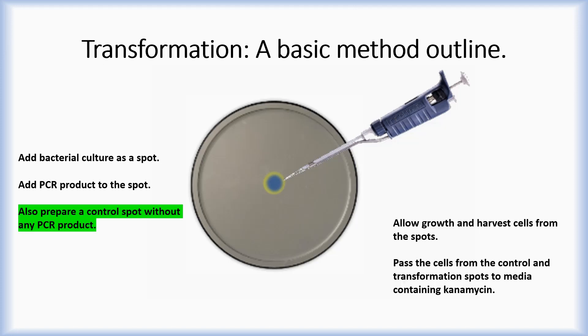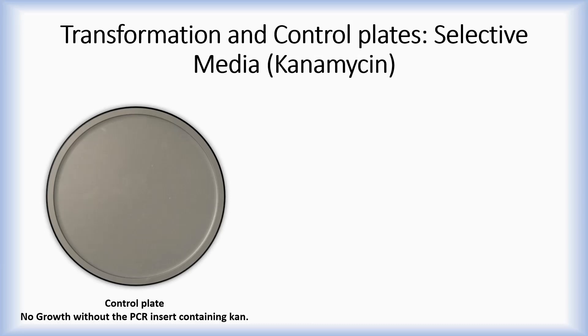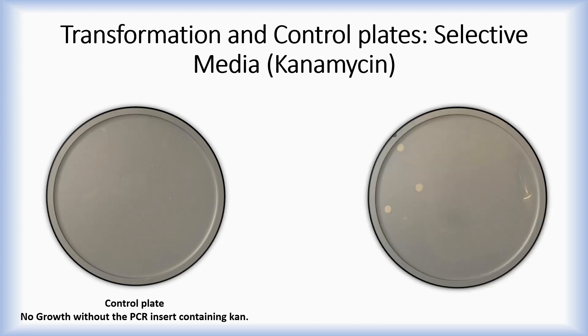Next, pass these cells to selective media. In this example, canamycin was used. The cells from the control and transformation spots were passed onto media containing canamycin. The control should not have canamycin resistance, resulting in no or limited growth. If the canamycin-containing PCR construct has been transformed, cells containing this will grow on canamycin plates.